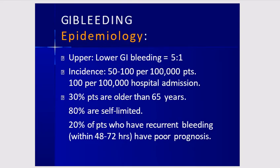Regarding epidemiology, upper GI bleed is more common than lower GI bleed in a ratio of 5 to 1. The incidence is 50 to 100 per 100,000 patients. Thirty percent are older than 65 years. Eighty percent are self-limited, and 20% have recurrent bleeding within 48 to 72 hours and have a poor prognosis.